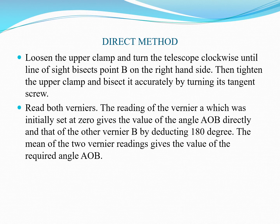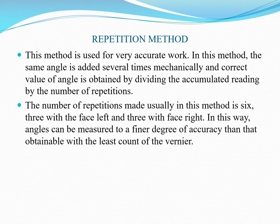After that, read both verniers — vernier A and vernier B. The reading of vernier A, which was initially set at zero, gives the value of angle AOB directly. The reading of vernier B, by deducting 180 degrees, gives the angle. The mean of the two vernier readings gives the required horizontal angle AOB.